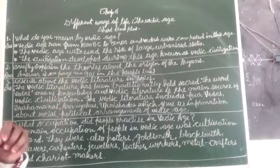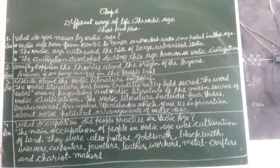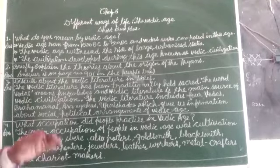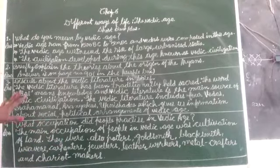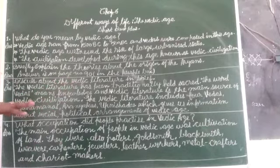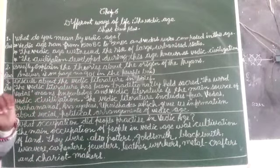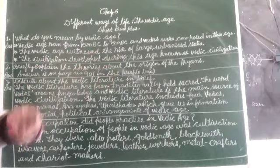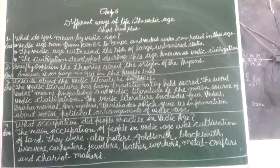The Vedic Age is when big cities and states were formed. The civilization developed during this age is known as Vedic civilization. Question number 2.